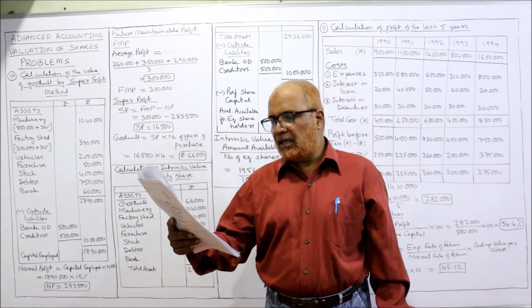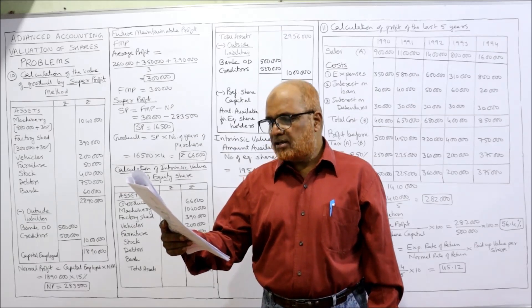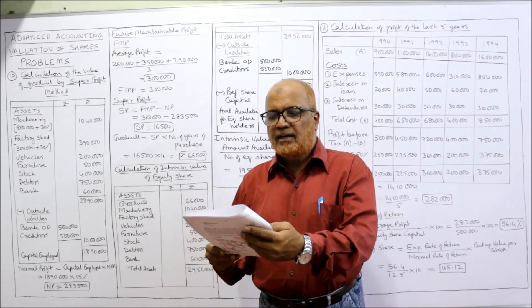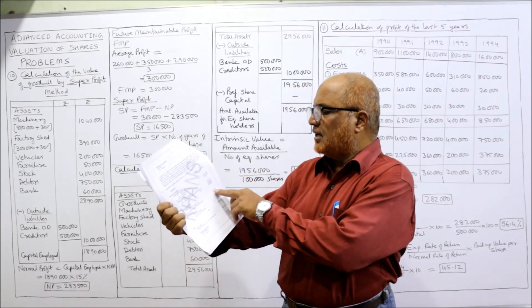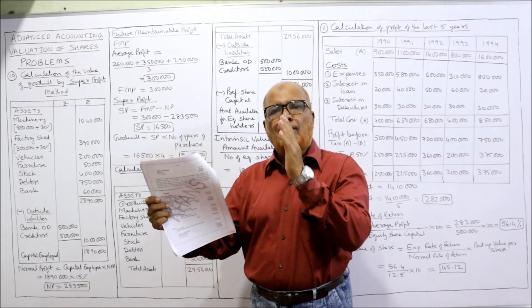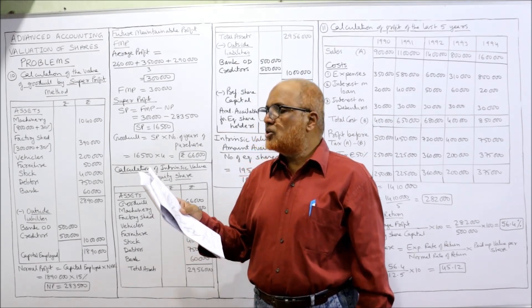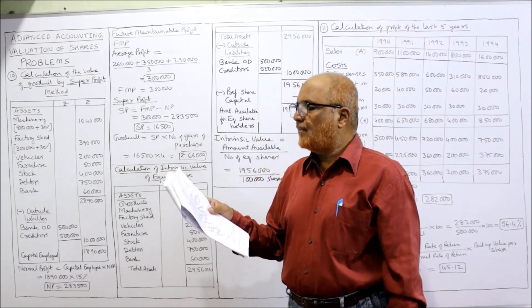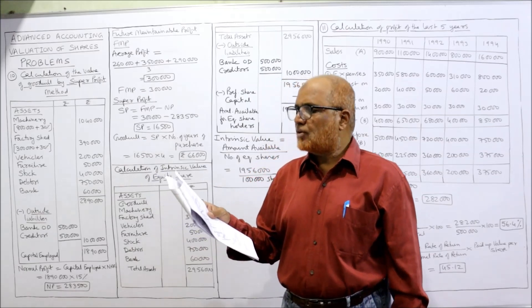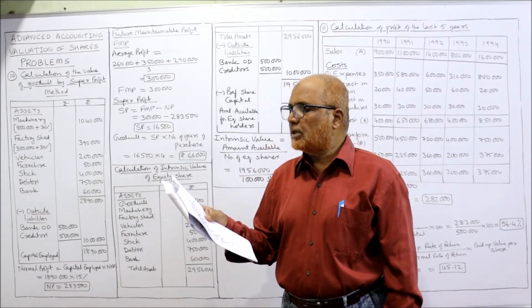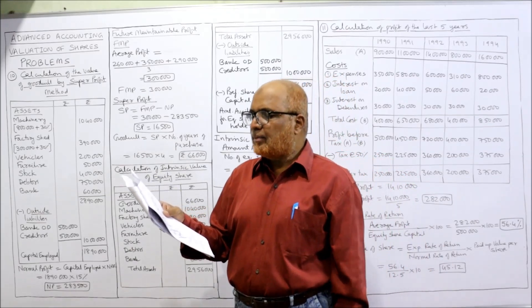Share capital: 1 lakh equity shares of ₹10 each = 10 lakh. Reserves and surplus: general reserve and P&L account. Tangible assets are given as 13 lakh 50 thousand, broken down as: machinery 8 lakh, factory shed 3 lakh, vehicle 2 lakh, and furniture 50 thousand — total 13 lakh 50 thousand.